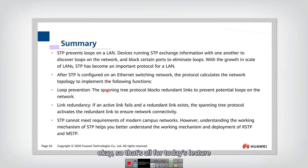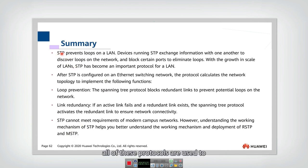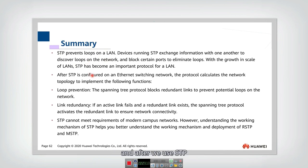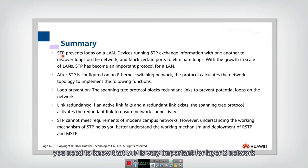That's all for today's lecture. We introduced three different protocols: STP, RSTP, and Multiple STP (MSTP). All of these protocols are used to prevent loops on layer two switches. Layer two switch loops cause dramatic performance degradation because they generate broadcast storms. By using STP, the network can eliminate loops and guarantee reliability, providing loop prevention and link redundancy at the same time. STP is very important for layer two networks.